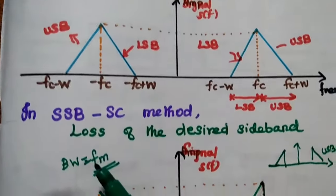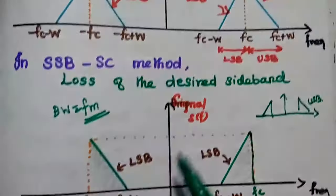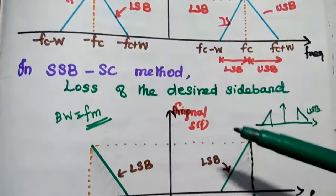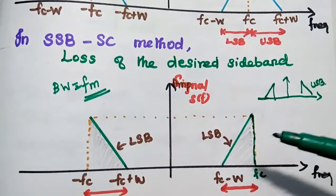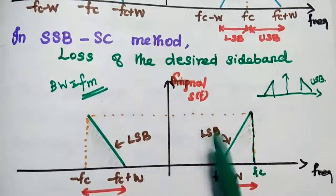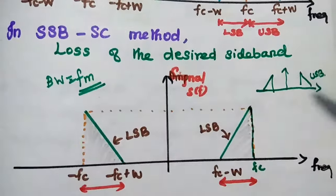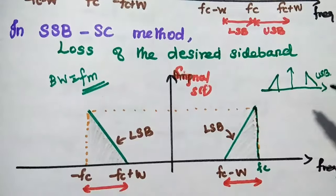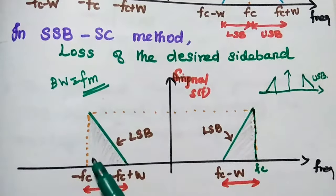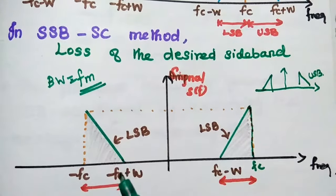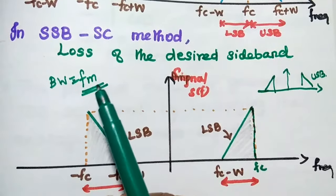That's why we move on to the Single Sideband Suppressed Carrier Method. In this method, instead of transmitting two sidebands, we transmit only the desired sideband — either the lower sideband or the upper sideband. In the diagram, you can see the lower sideband transmission. In the case of upper sideband, the diagram looks like this. In this single sideband suppressed carrier method, the carrier is also suppressed and only one sideband is transmitted, so its bandwidth equals the message frequency itself.